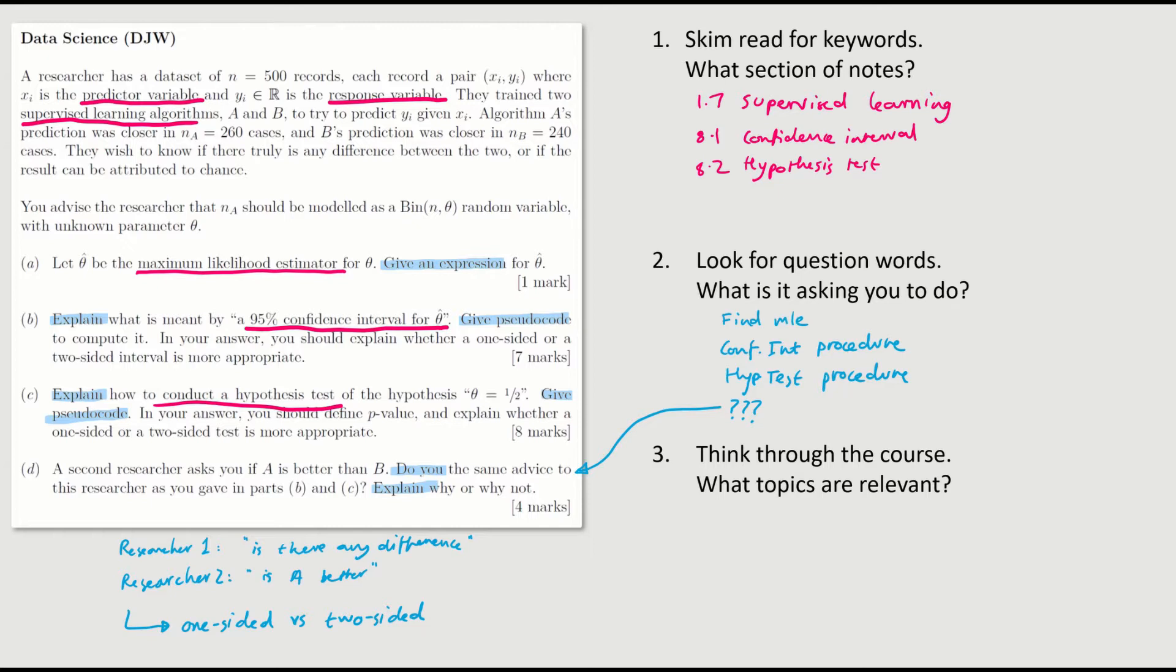And that leads us to think, this is a question about the interpretation of these confidence interval and hypothesis testing procedures. It's a question about one sided versus two sided intervals. And that's why parts B and C made such a big deal of one sided versus two sided. So all the stuff about supervised learning in the top, that looks like it's a red herring. It's not connected to the questions we actually have to answer.